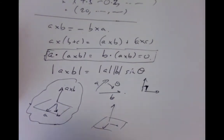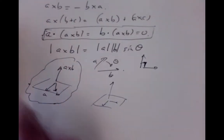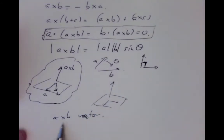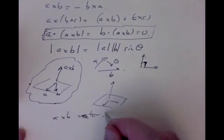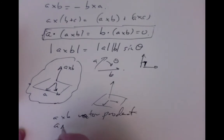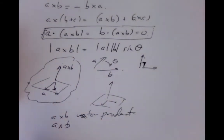The cross product is often called the vector product because A×B is a vector, unlike the dot product which is a number. A common notation, especially in France and continental Europe, is A∧B (A wedge B).